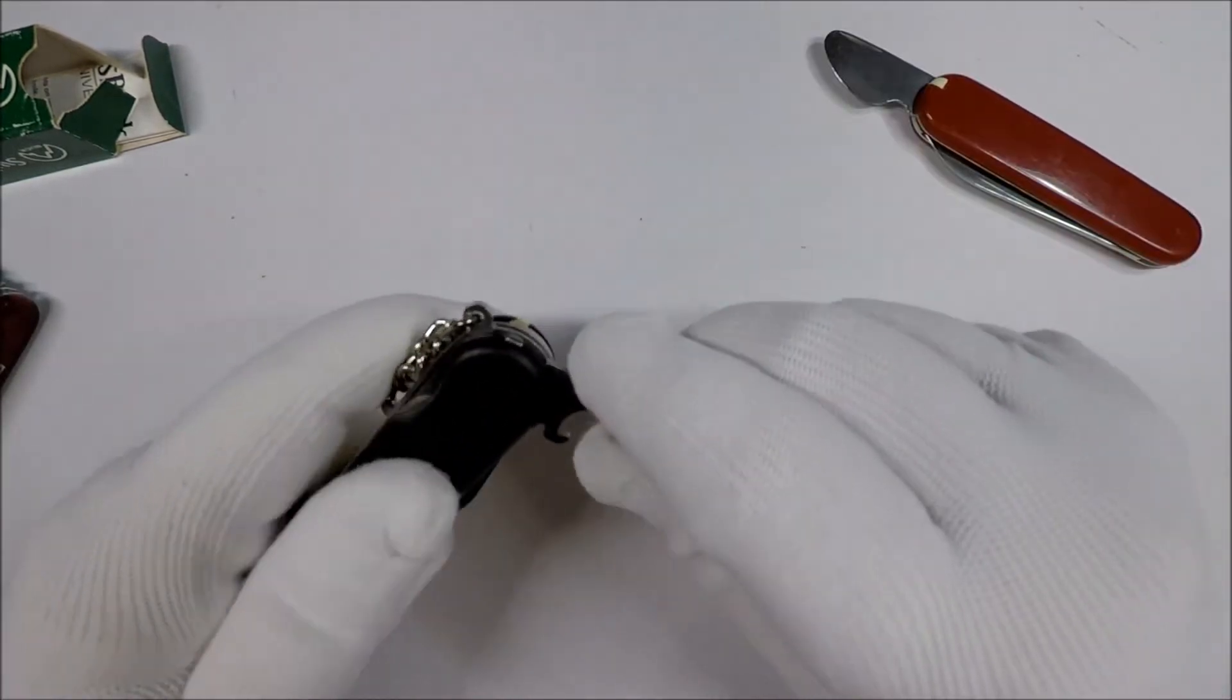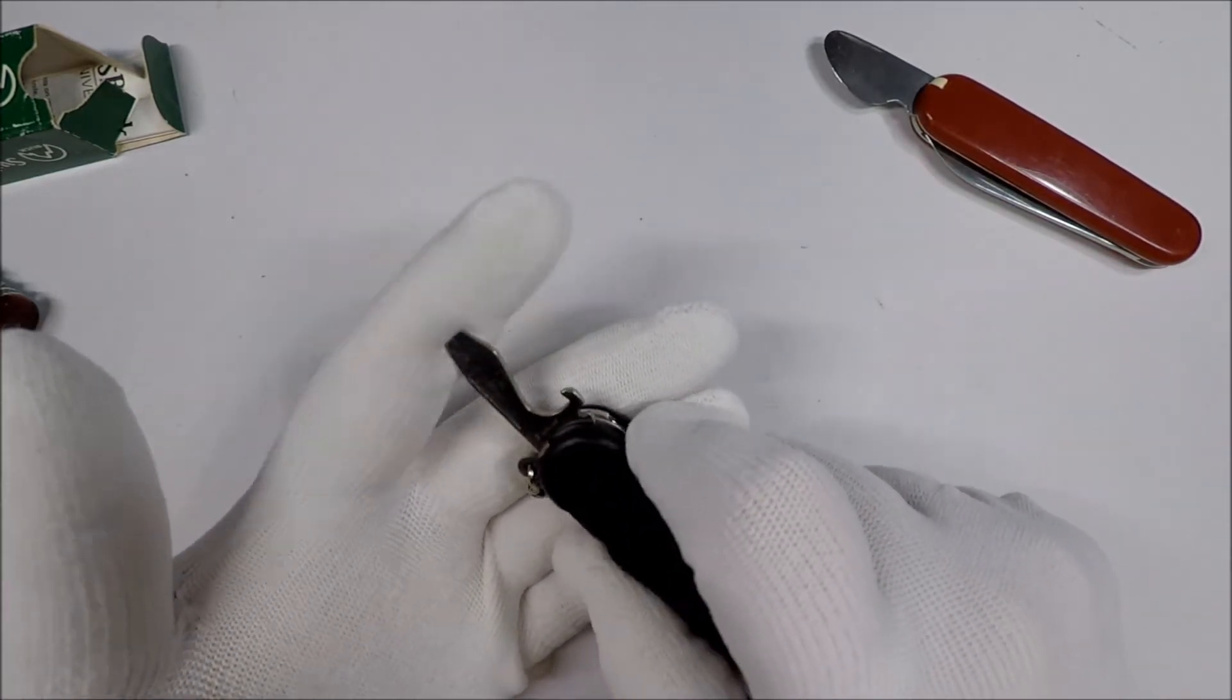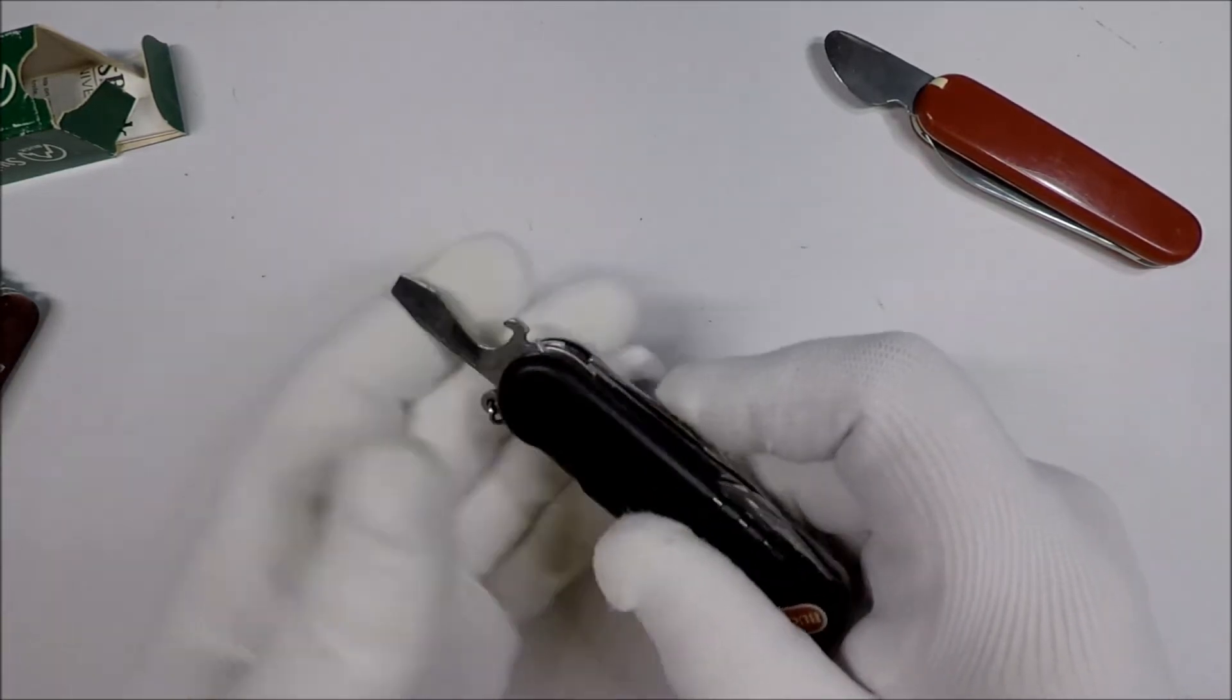You have the Winger-style bottle opener, screwdriver, and wire stripper.